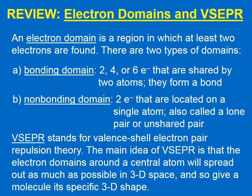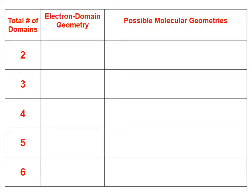VSEPR stands for valence shell electron pair repulsion theory. The main idea of VSEPR is that the electron domains around a central atom will spread out as much as possible in three-dimensional space, giving a molecule its specific three-dimensional shape. The electron domain geometry has a name based on how many total domains the species has.